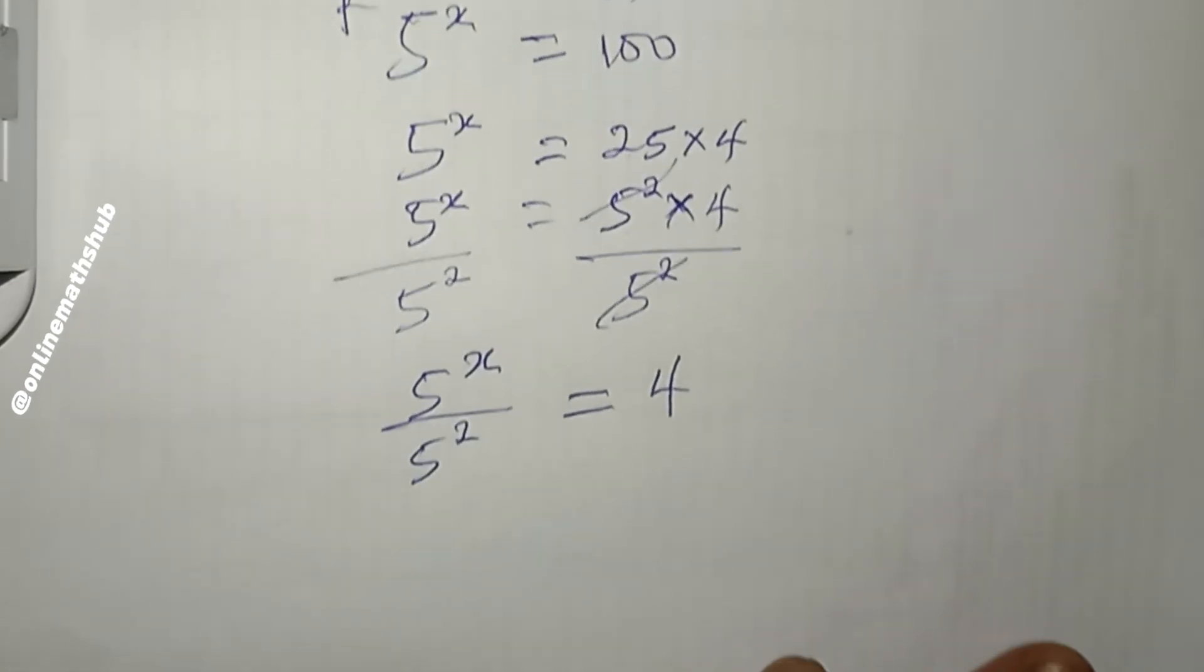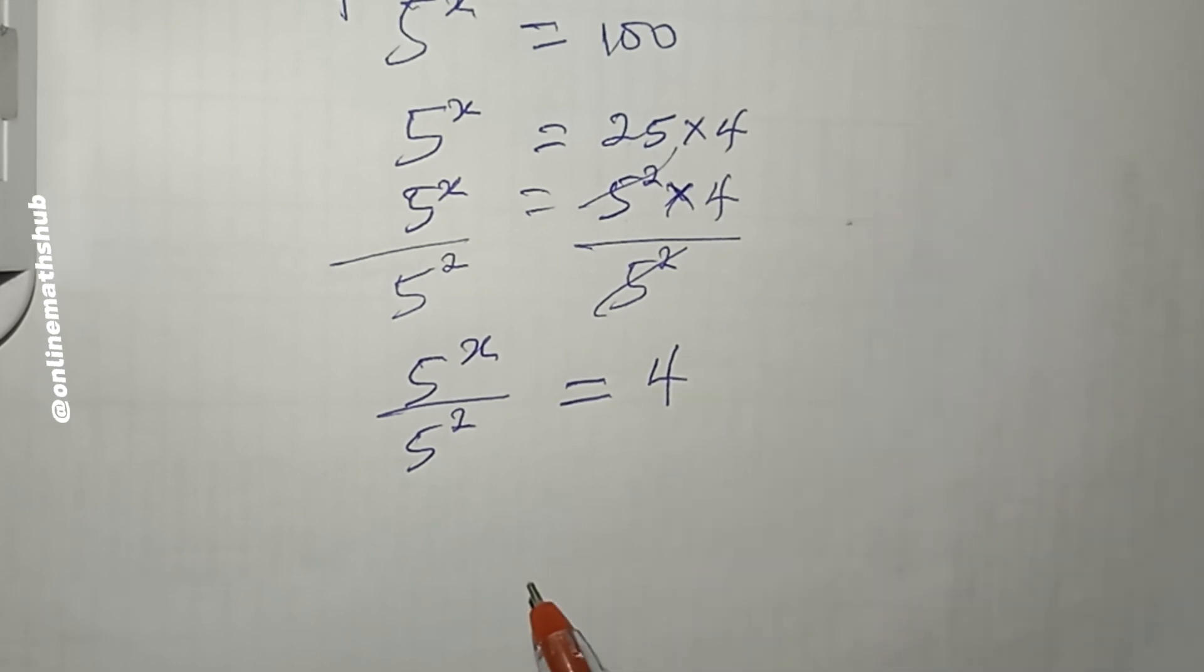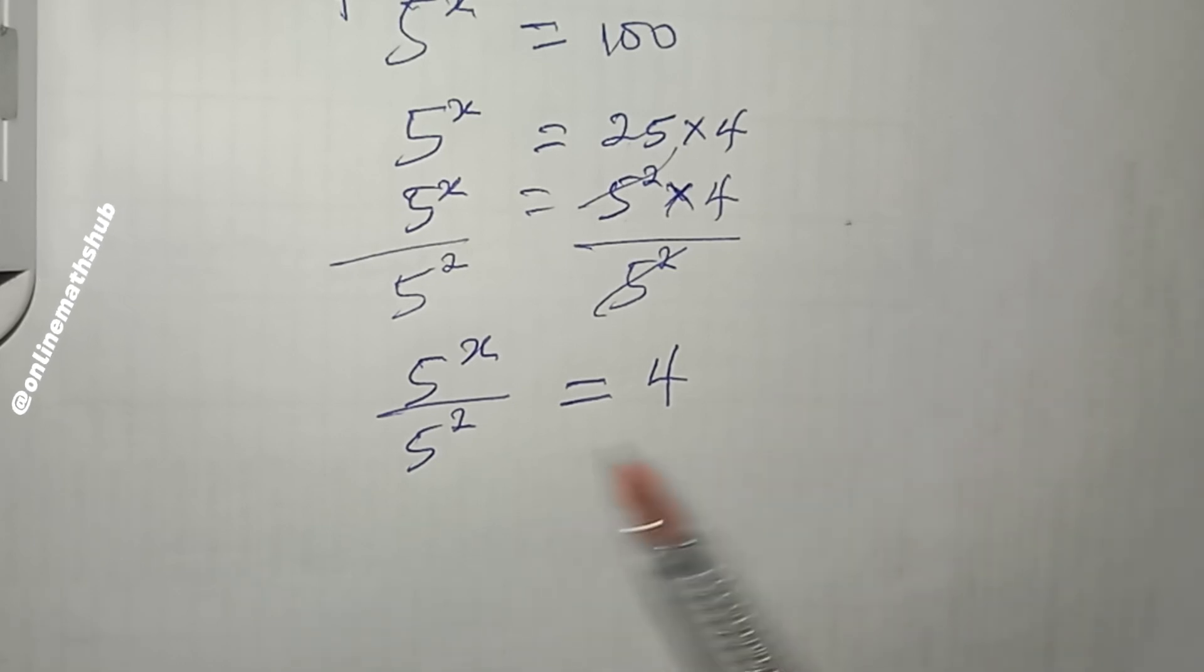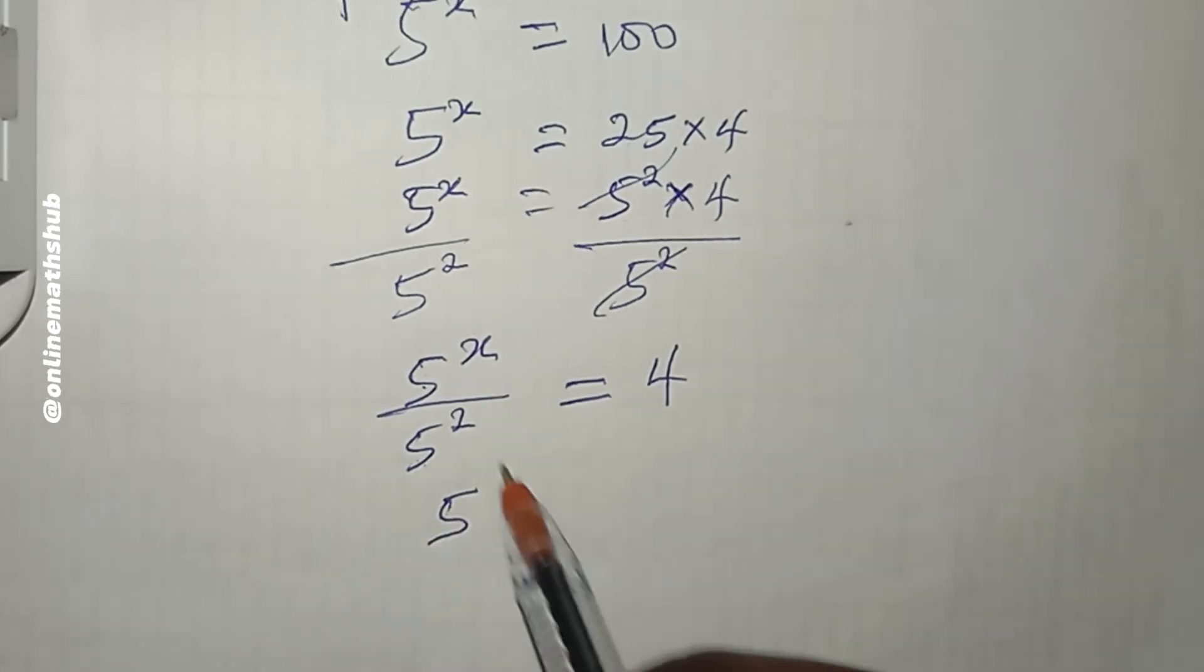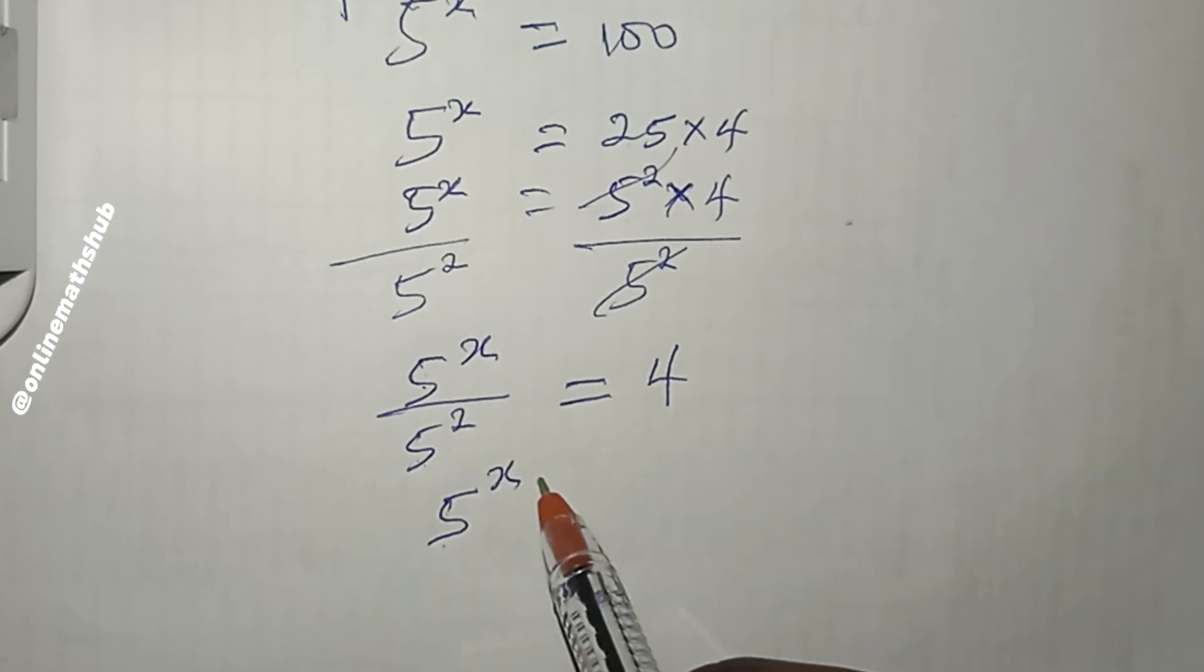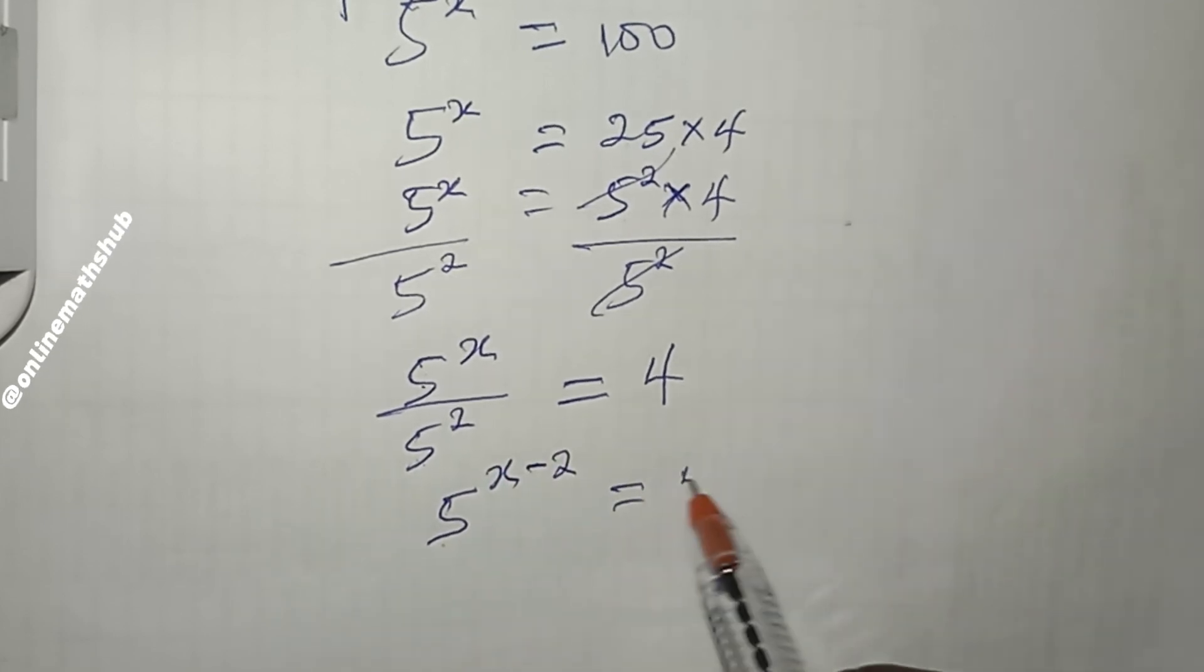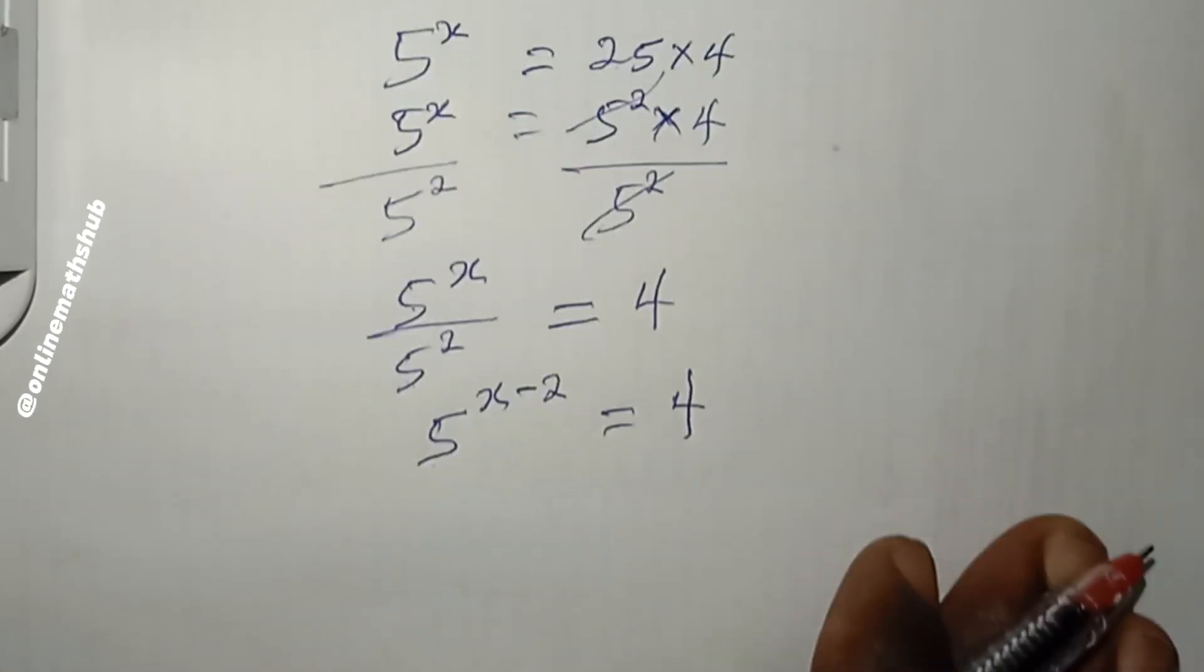Next, what I will do is utilize one of the properties of indices, which is the division law. Since the numerator and denominator have the same base, I'm going to pick one and subtract the powers. This is now 5^(x-2) = 4.